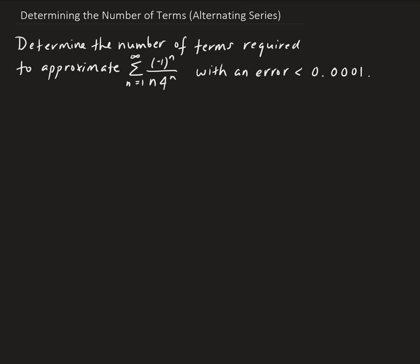This is an alternating series, and it can be shown that it converges. Remember that to show an alternating series converges, the first condition is that the limit of the nth term has to go to 0. And secondly, the (n+1)th term must be less than or equal to the nth term. That can be easily verified for this series.